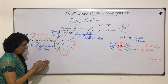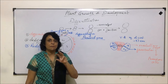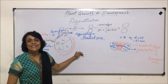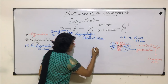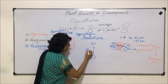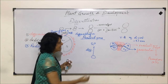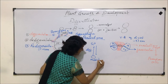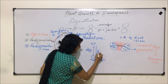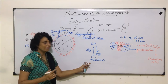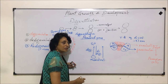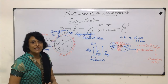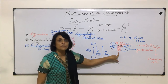So what exactly are we trying to understand by these three terms? First is differentiation — a cell gets specialized. Then the cell again comes into the meristematic stage; we call that de-differentiation. And after dividing for some time, it again becomes specialized; we call it re-differentiation. These three processes can be easily understood using the example of parenchyma cells.